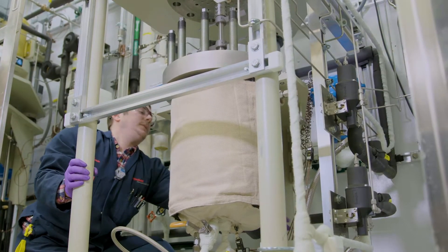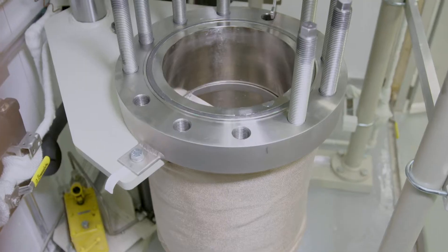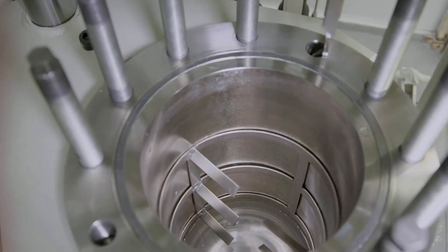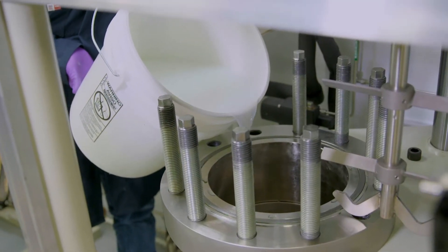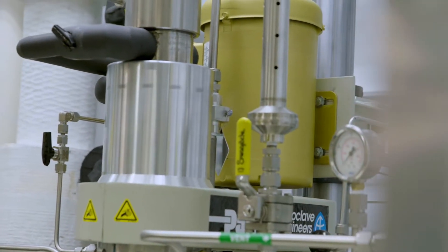Creating a catalyst begins with creating active materials through hydrothermal synthesis. This process combines several raw materials into a slurry that is poured into a reactor. The reactor applies heat and agitates the material, which results in the formation of catalytic crystals.